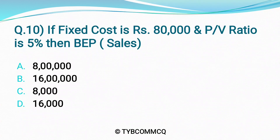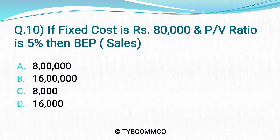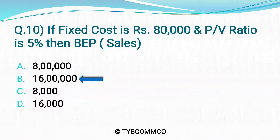Question No. 10: If Fixed Cost is Rs. 80,000 and PV Ratio is 5%, then BEP Sales is equal to ___. Option A: 8,00,000. Option B: 16,00,000. Option C: 8,000. Option D: 16,000. The correct option is Option B — Rs. 16,00,000.